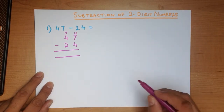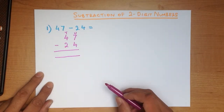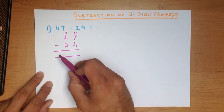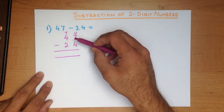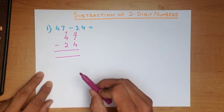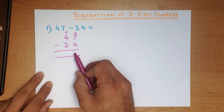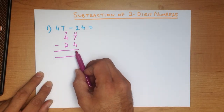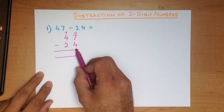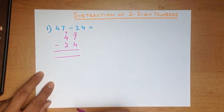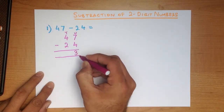In order to work the answer out using the vertical format, also known as long subtraction, we simply minus the columns one by one. We always start with the column on the right-hand side. What is 7 minus 4? That's right, the answer is 3.